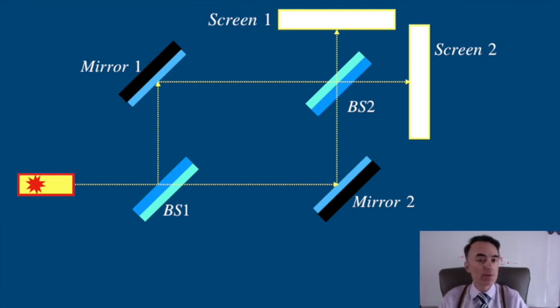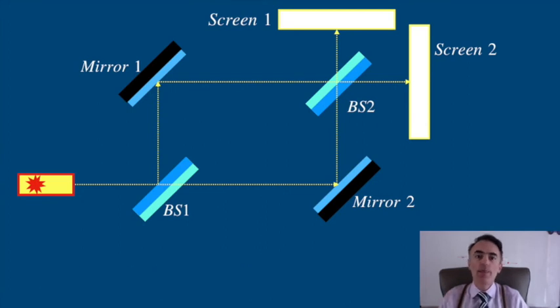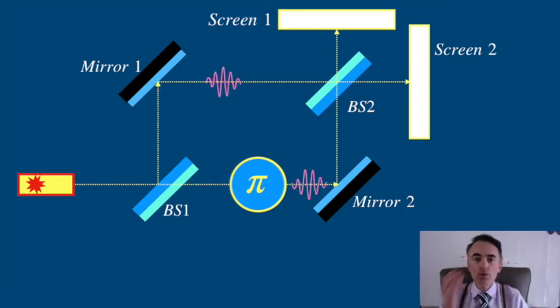You can also use this interferometer in quantum communications. If you send single photons and then apply a pi phase shift to one of the paths, you can use this to encode bits of information. You would be changing the output port of the photon that way.